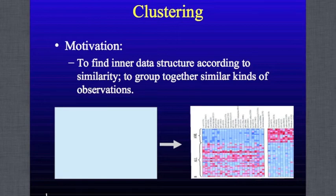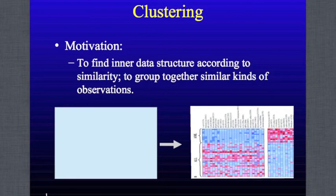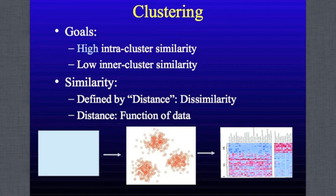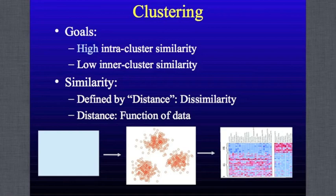We already know how to classify samples when we know which are cancer and which are controls, or when we have gene ontology data. But imagine a situation where we know nothing about the genes or samples — could we still get some information? For example, could we identify which genes have similar expression patterns? Yes — that's exactly what clustering can tell us. Intuitively, clustering puts similar items in one group and separates different items into different groups. For example, given 100 samples and their corresponding microarrays, we can assign each sample a position in a virtual space and calculate the distance between each pair of samples to find their similarity.